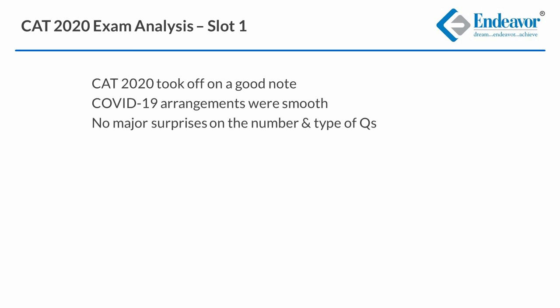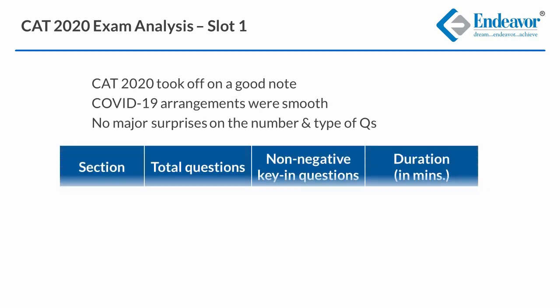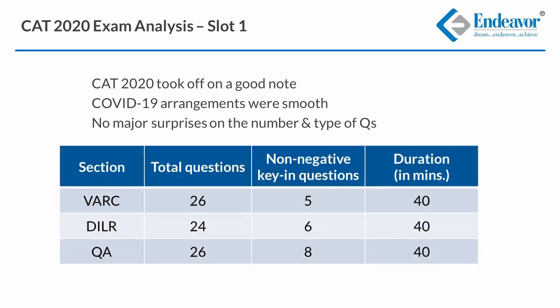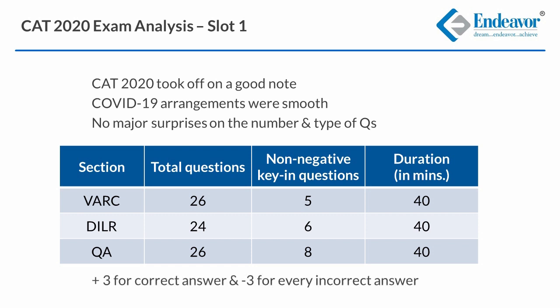The overall format of the paper was as follows. The overall duration of the paper was 2 hours and each sectional carried 40 minutes. The marks allocated per question were plus 3 for every correct answer and minus 3 for every incorrect answer.